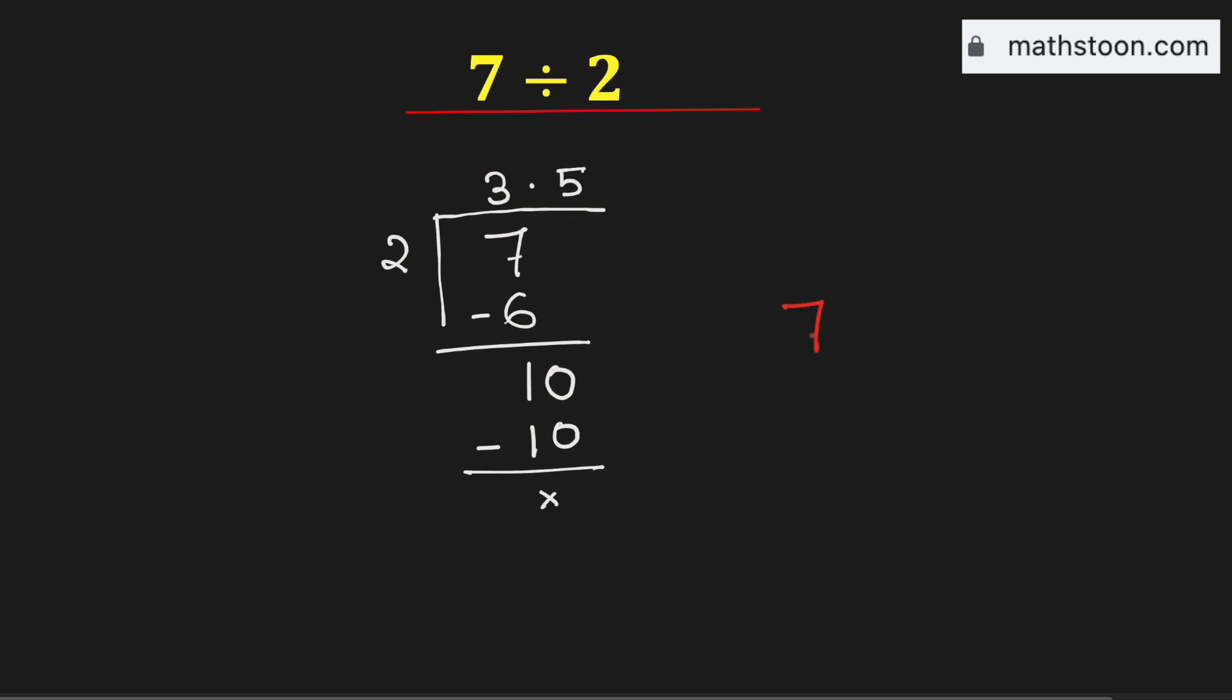So 7 divided by 2 is same as this number which is 3.5. And this is our final answer.